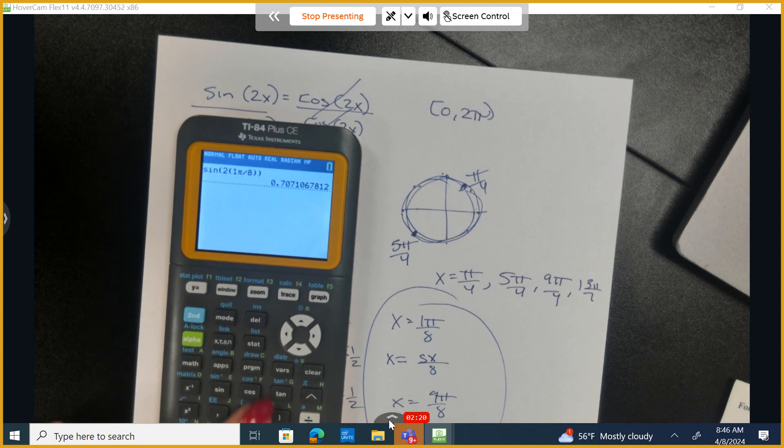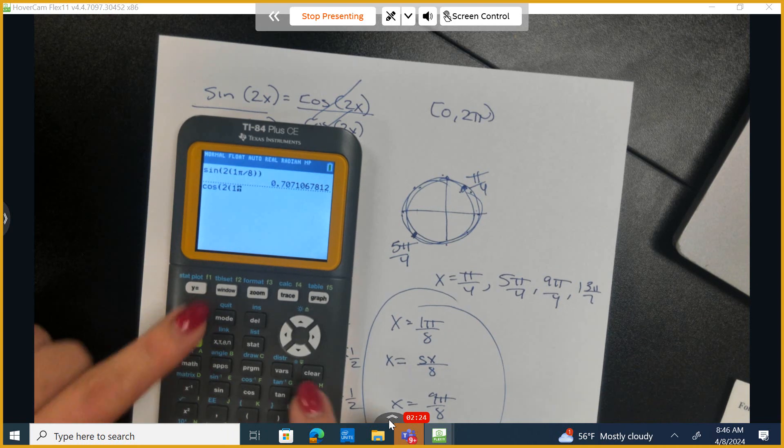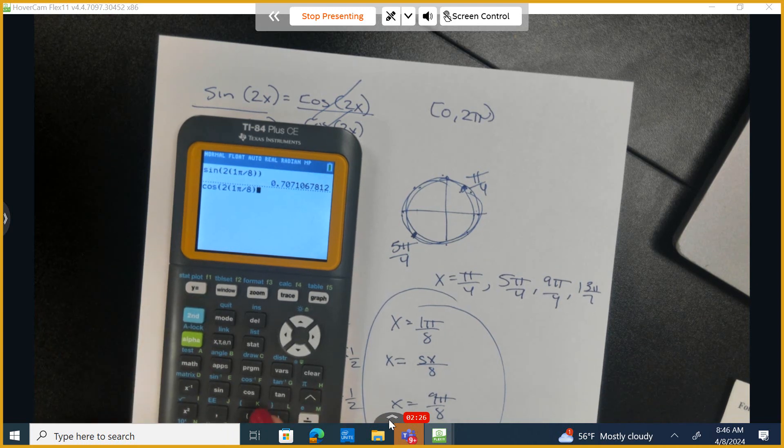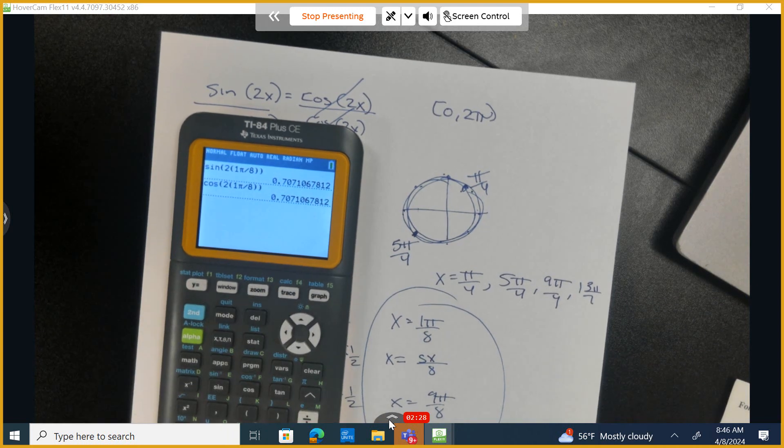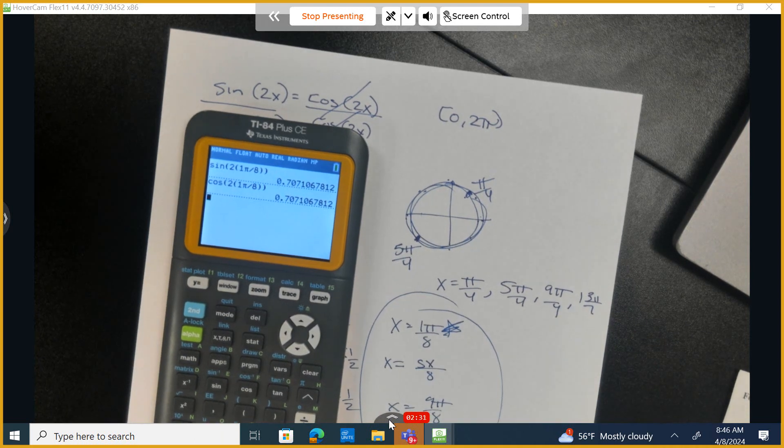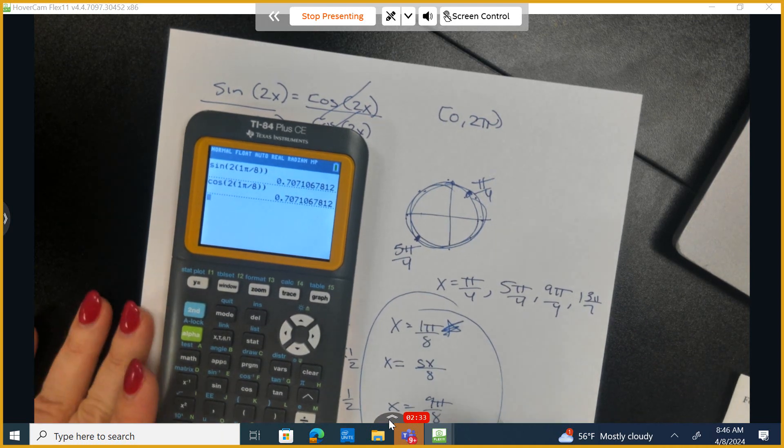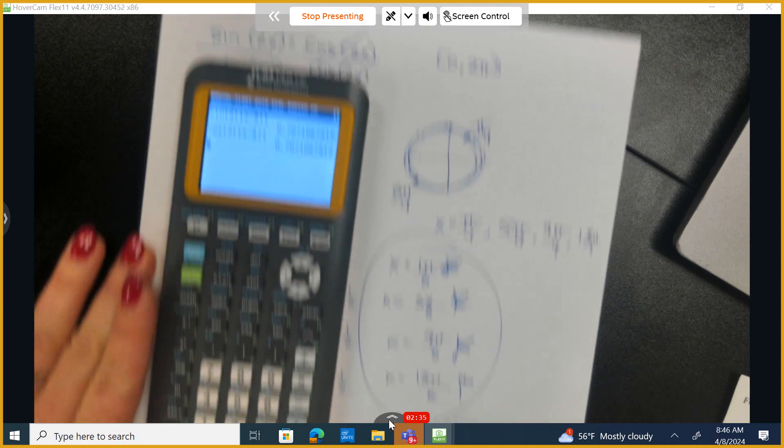Okay, this is what I have, and now I'll do the cosine of 2 times pi divided by 8. And we can see the left side equals the right side, so this one works. And you're going to go through and check the other 3 remaining solutions, and I'll tell you right now, they do all work.